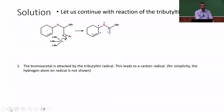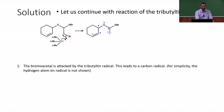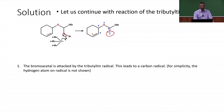Once the tributyltin radical is formed, it attacks the bromoacetal derivative. The C–Br bond is homolytically cleaved by the radical: one bonded electron is shared between the bromine–tin bond and the other goes to the carbon atom present in the system. We end up with an alkyl radical. For simplicity, we are not showing the hydrogen atom on this particular radical — a carbon radical is formed in this reaction.